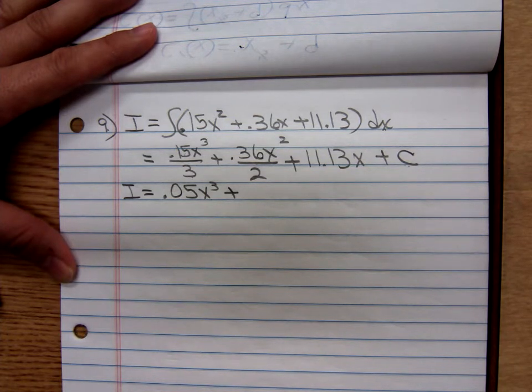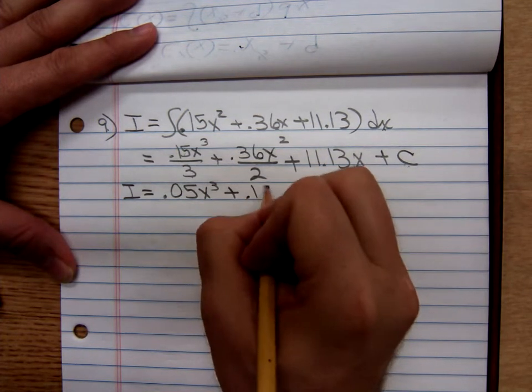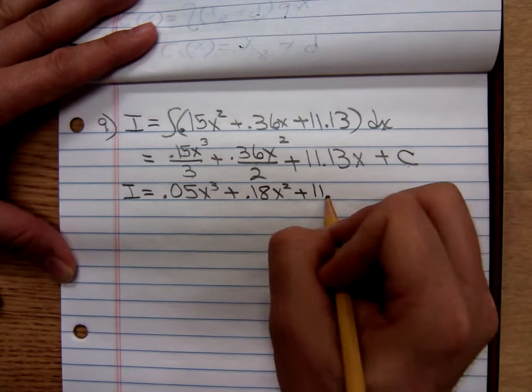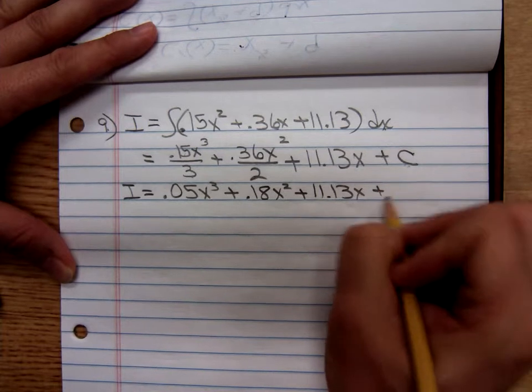0.36 divided by 2, that's 0.18x squared here, and that's 11.13x plus C.